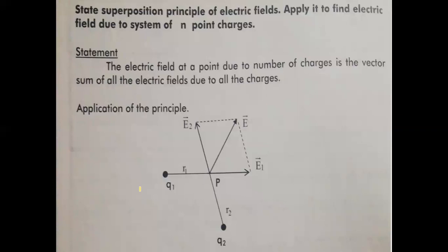Next: state the superposition principle of electric fields applied to find the electric field of a system of n-point charges. This derivation is the same as we stated the superposition principle for forces applied to n-point charges. Statement: the electric field at a point due to a number of charges is the vector sum of all the electric fields due to all the charges.